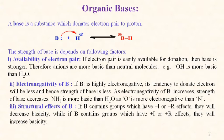Third is structural effects of B: if B contains groups which have electron-withdrawing inductive or electron-withdrawing resonance effects, they will decrease basicity. While if B contains groups which have electron-donating inductive or electron-donating resonance effects, they will increase the basicity.